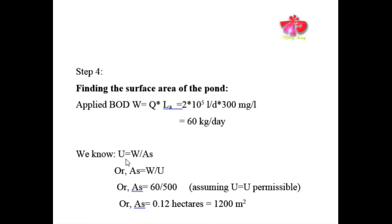We use the maximum permissible organic loading of 500 kg per hectare per day as a first trial. Surface area = W / organic loading = 60 kg per day ÷ 500 kg per hectare per day = 0.12 hectares, which is equivalent to 1200 square meters.